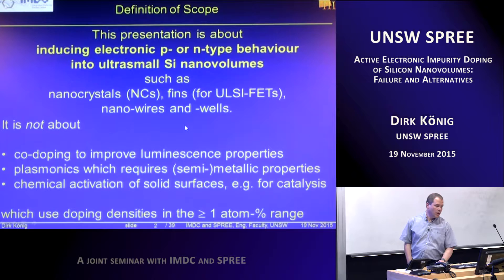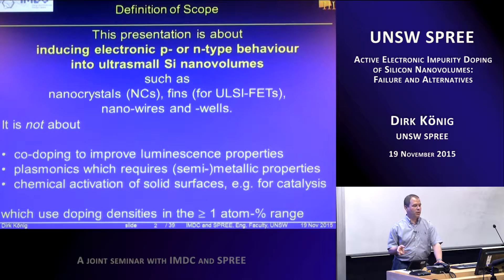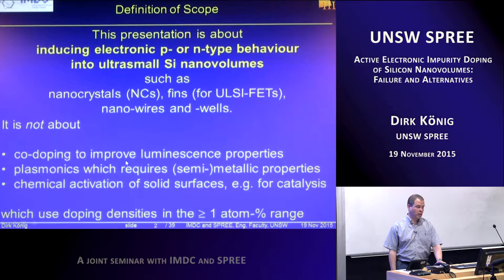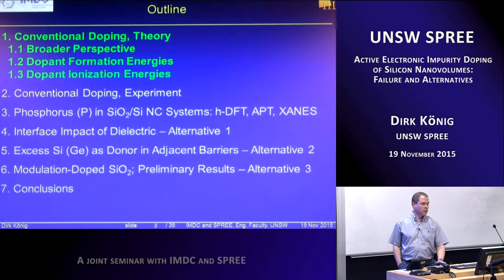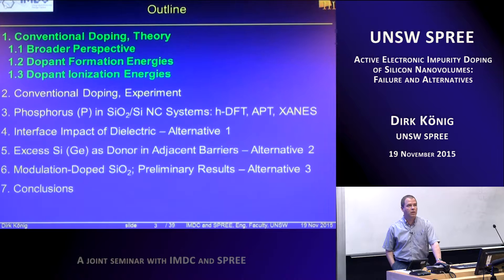It is not about doping used in other respects, like co-doping to improve luminescence properties, or for plasmonics, which actually turns silicon nanodots into metal-like regime. I'll start with the conventional doping theory and give you a broad perspective, before coming to experimental data from the literature, then carrying on with own results — which gets more precise with phosphorus in the silicon dioxide silicon nanocrystal system — and I will present three alternatives to conventional doping, as we're going to see that conventional doping doesn't really cut it.